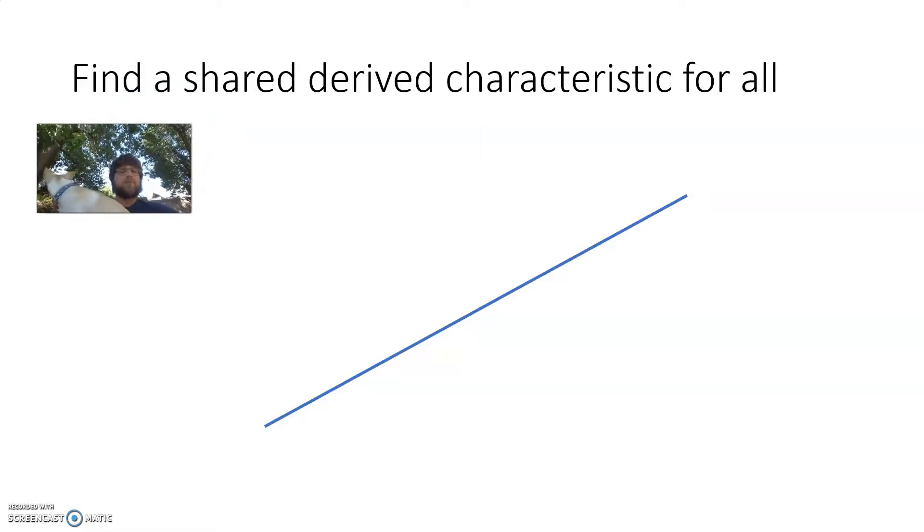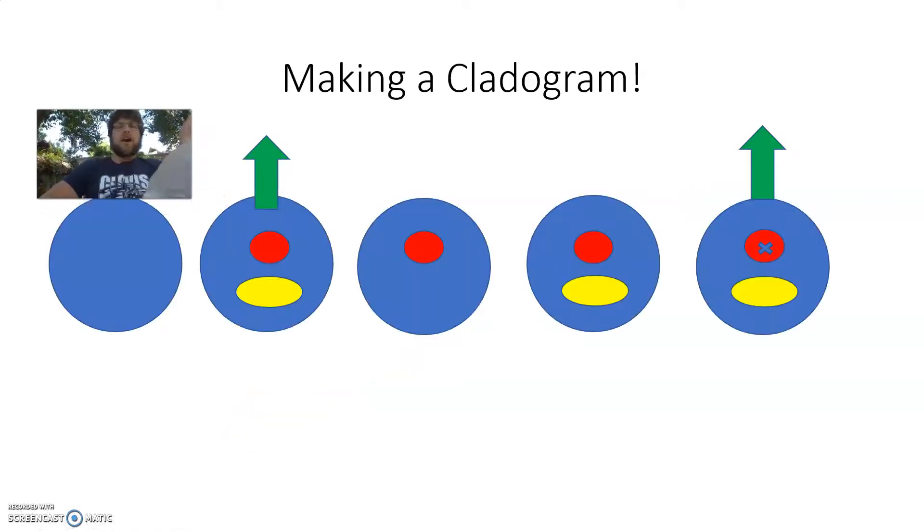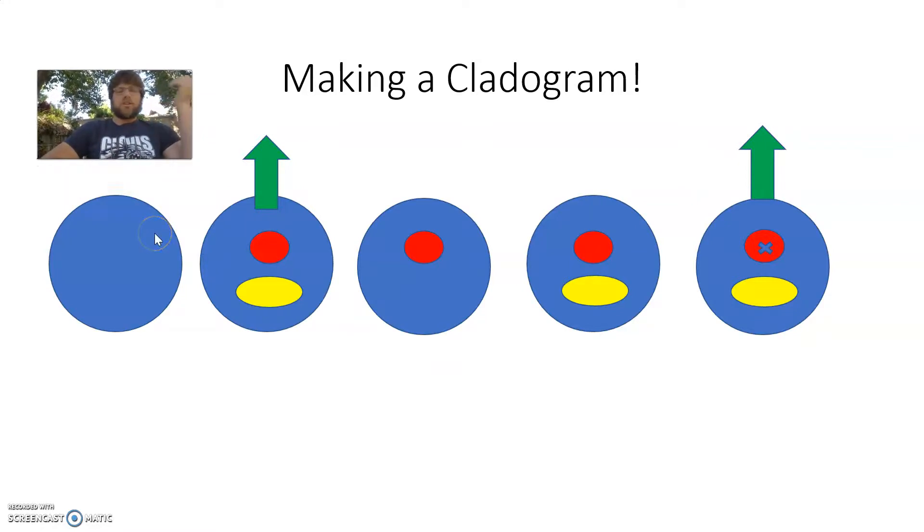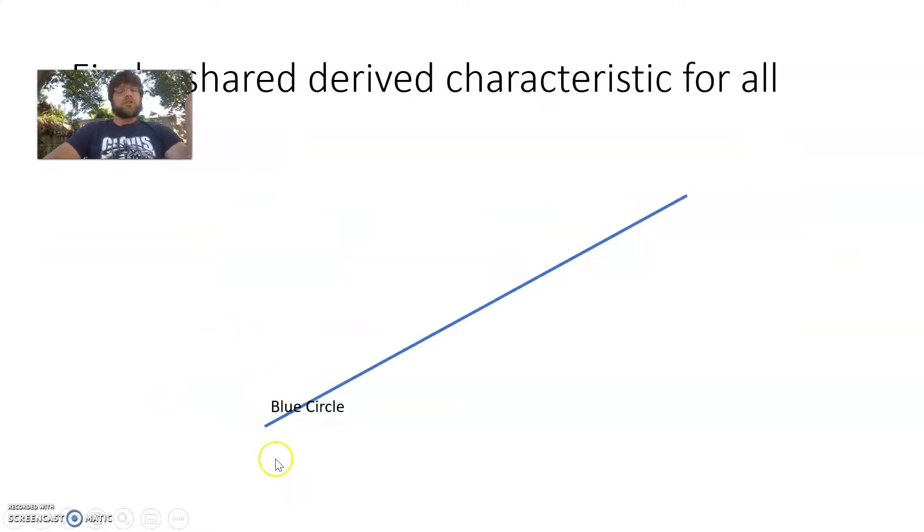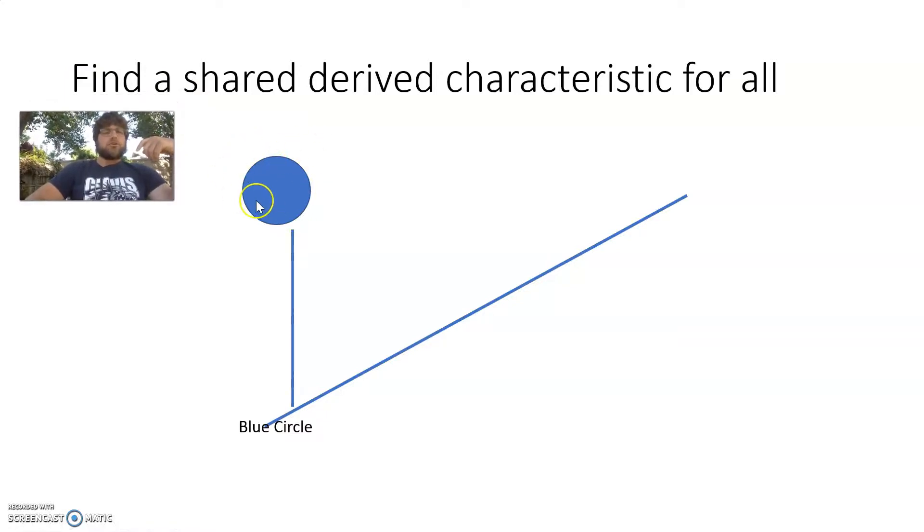All right. So when we start out, I want to create a cladogram. I'm going to use a baseline. And I first want to find one shared-derived characteristic for all of my species. So if I flip back to my five species, if I look at the characteristics, blue circle is shared with all of them. That is one shared-derived characteristic for all five species. So at the root of my cladogram, I'm going to put blue circle as my shared-derived characteristic. And then I'm going to have one species diverge, one population diverge, which will lead to the modern-day blue circle species.